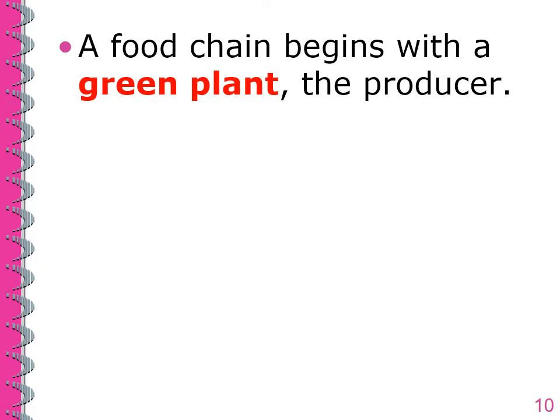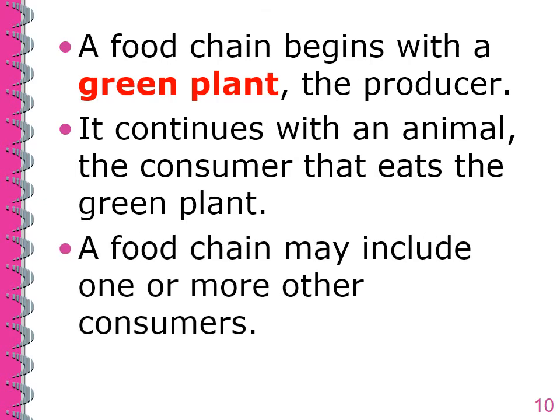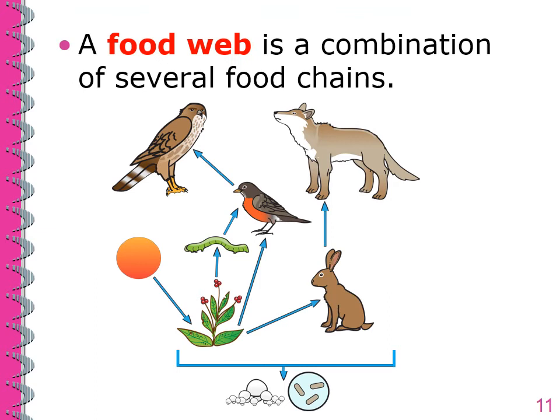A food chain begins with a grain plant, the producer. It continues with an animal, the consumer that eats the grain plant. A food chain may include one or more other animals. A food web is a combination of several food chains.